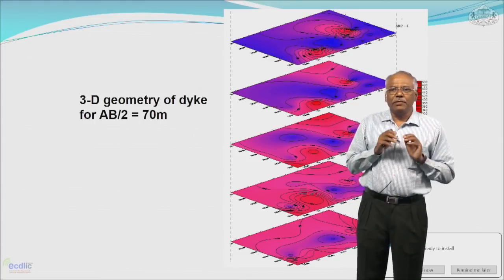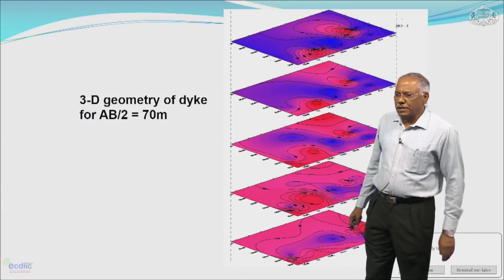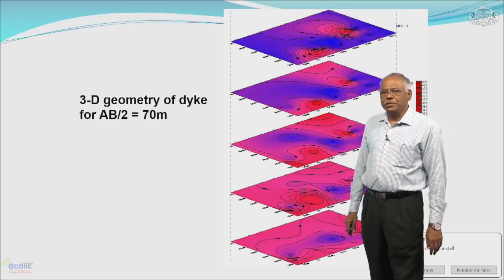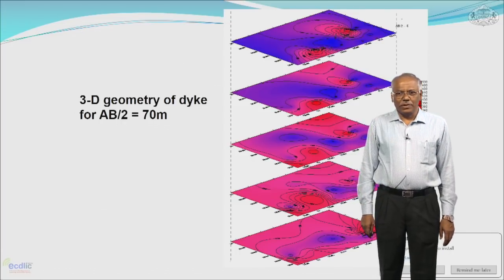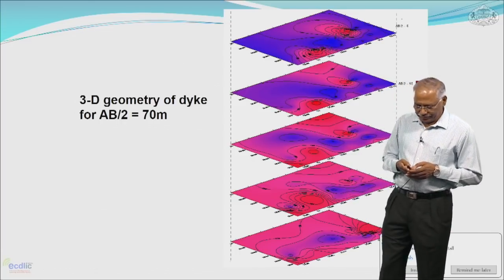This is typically how the electrical resistivity technique can give you a fair insight about the occurrence of ground water and the two-dimensional and three-dimensional aquifer geometry of a given area. This is how this particular technique can be used in the search for ground water. Thank you very much.